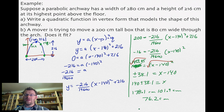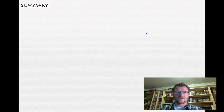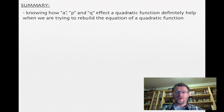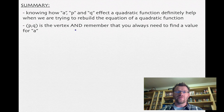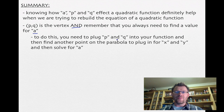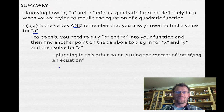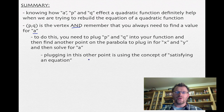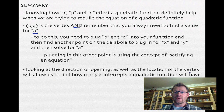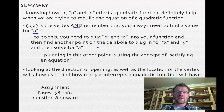In summary, knowing how a, p, and q affect the quadratic function helps us rebuild the equation of a parabola. Remember that (p, q) is the vertex, and you must always find the value for a by plugging in p and q and then using another point on the parabola to solve — this is the satisfying the equation concept. The direction of opening combined with the vertex location tells us how many x-intercepts there are. Your assignment is on pages 158 to 162, questions 8 onward. Good luck and we'll see you in class.